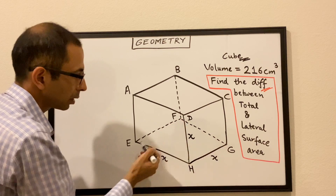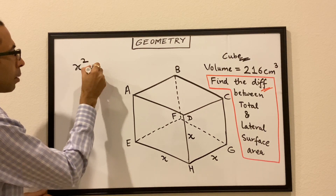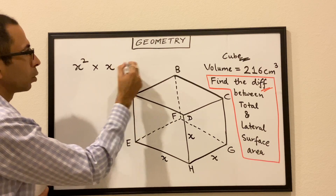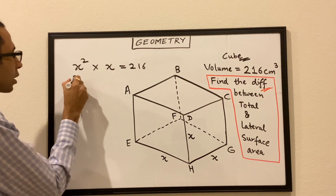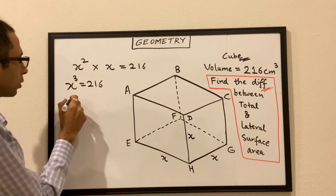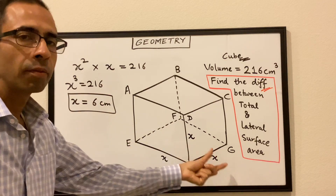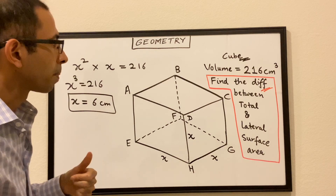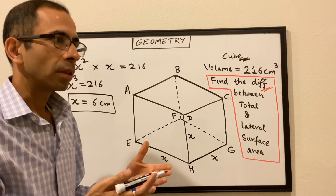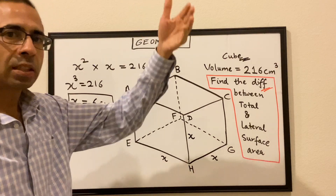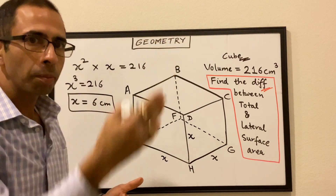The volume of a 3D figure is the area of the base times the height. The area of this square base would be x times x, so x squared. x squared times the height, which is also x, equals 216. x squared times x is x cubed, so x cubed equals 216. Taking the cube root on both sides gives x equals 6. So each side — the length, width, and height of this cube — is 6 cm. They are asking for the difference between the total and the lateral surface area, which equals the surface area of the top plus the bottom.